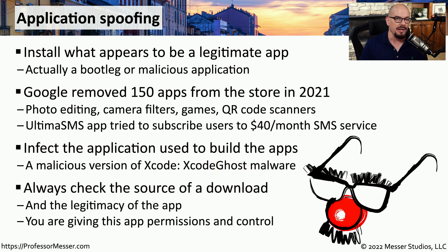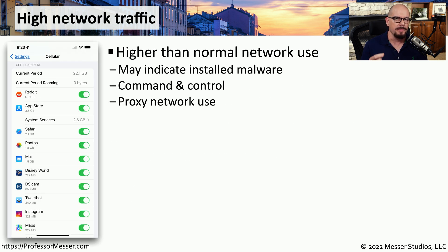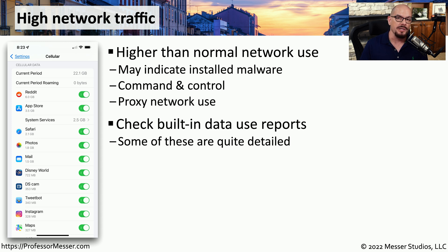When you install software, you're giving it access to your device and to your data, so you want to be sure that whatever you're installing comes from a trusted source. One thing that might clue you in to a potential security concern is a large amount of data transferred in or out of your mobile device. This may indicate that there's some malware already installed on your device, or there may be command and control signals being sent from a central source to your mobile device. Many mobile operating systems include a series of reports that can tell you exactly what type of network traffic is being used and what application is using it.